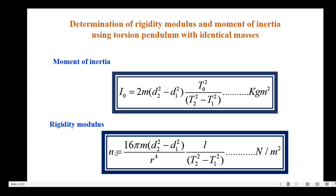The expression for rigidity modulus is: n equals 16 times pi times m times (d2² minus d1²) divided by r to the power 4 times l, over (t2² minus t1²). The unit for rigidity modulus is newton per meter squared.